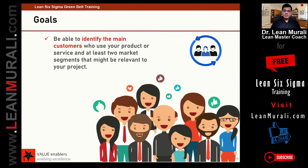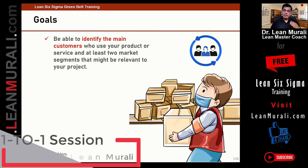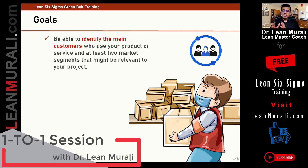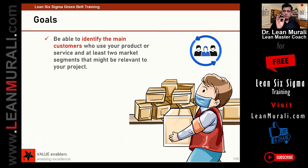When you talk about customers, the customers are not just the end customers. The customers can also be the next process or the subsequent process. The suppliers can be the previous process. So we call them internal customers and external customers. We need to be able to identify the main customers who use the product or service, or at least two market segments that might be relevant to your project.